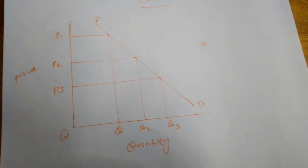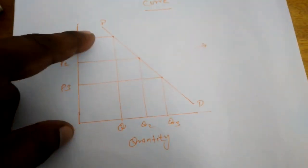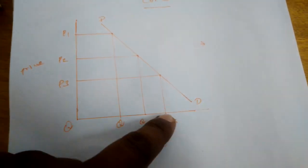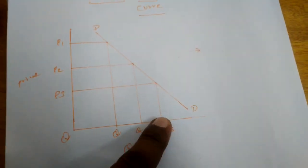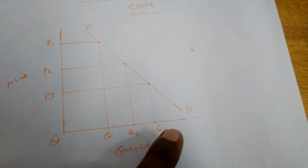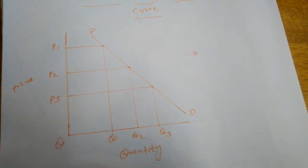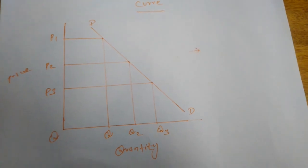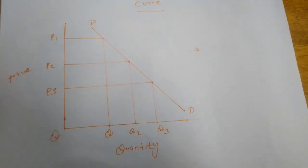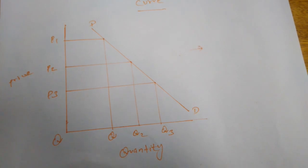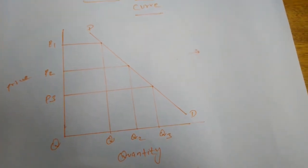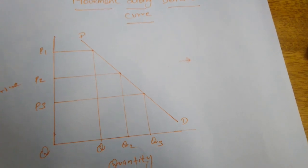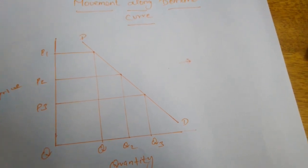We must note that along the demand curve, the quantity demanded of the commodity will increase or decrease only because of a change in price. The demand curve itself will not change — it will be constant. This is called extension or contraction of demand.